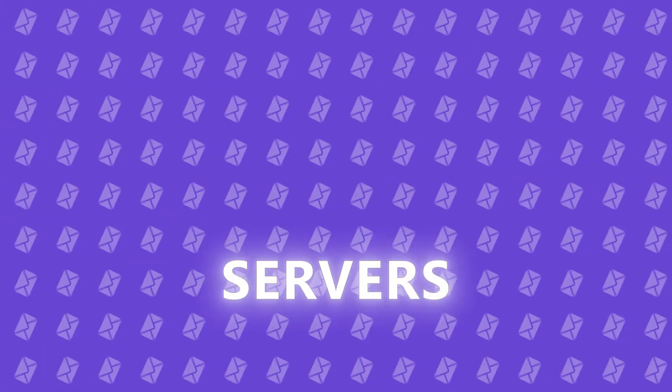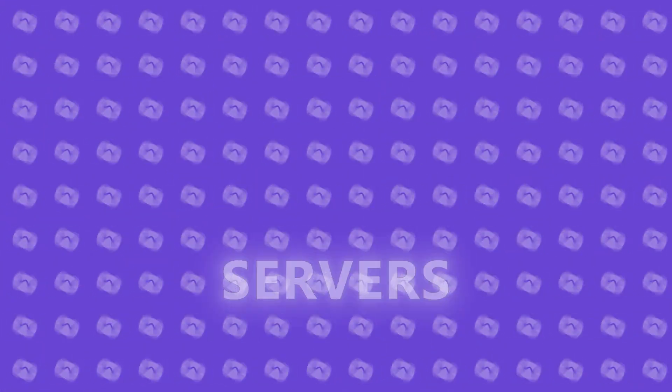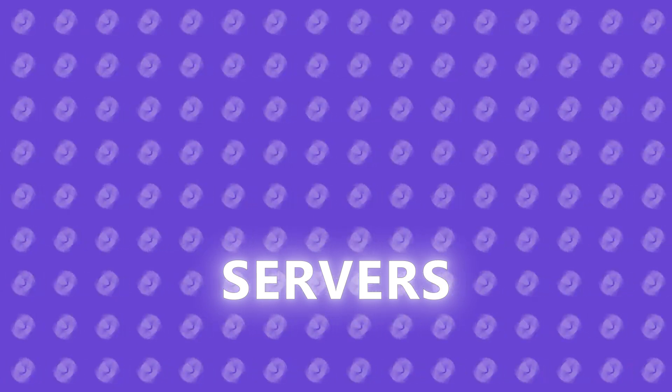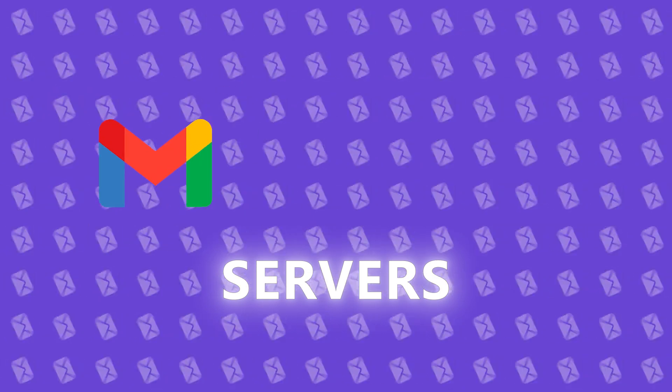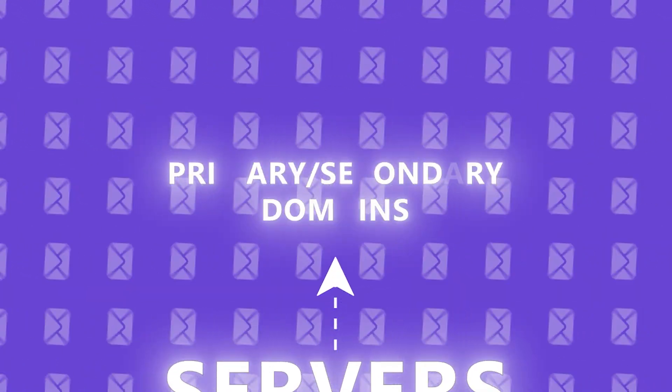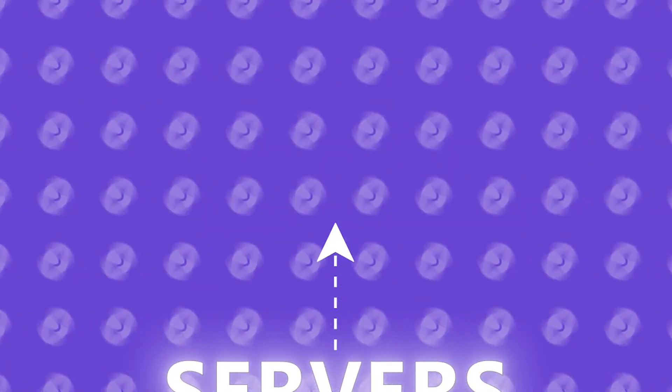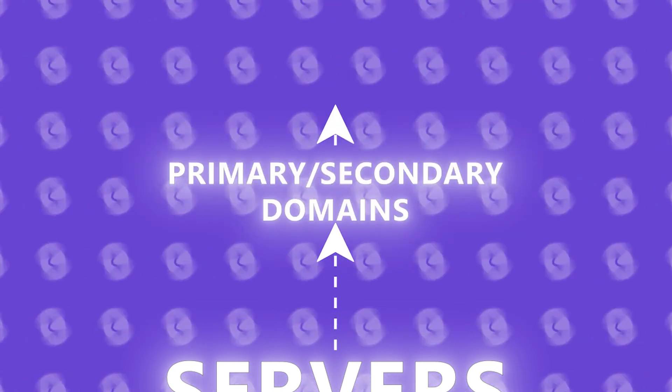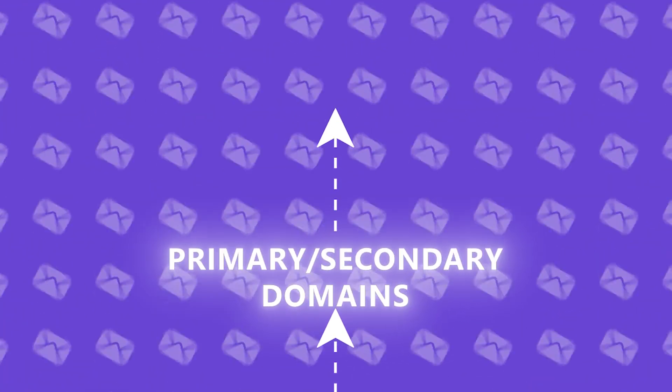Here's how it works. At the bottom, you have the server. This is provided by email service providers like Gmail, Outlook, and MailForge. The server is like the foundation, the most important part, because you keep everything else on top of it. After the server comes the user's primary or secondary domains. And at the tippy top, you have the mailboxes.